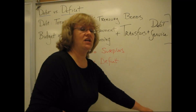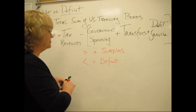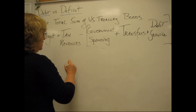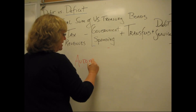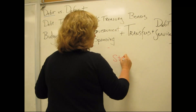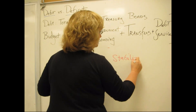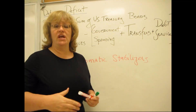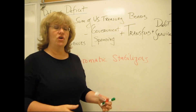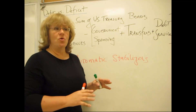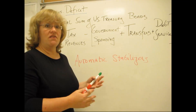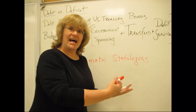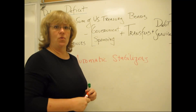Now I want to talk about another concept associated with the deficit that's important in this chapter — the idea of automatic stabilizers. These are parts of the budget that change automatically when the economy changes. Nobody is passing a new law or any different legislation. The way current laws and policies are written, certain aspects of the budget will change even if no one does anything.